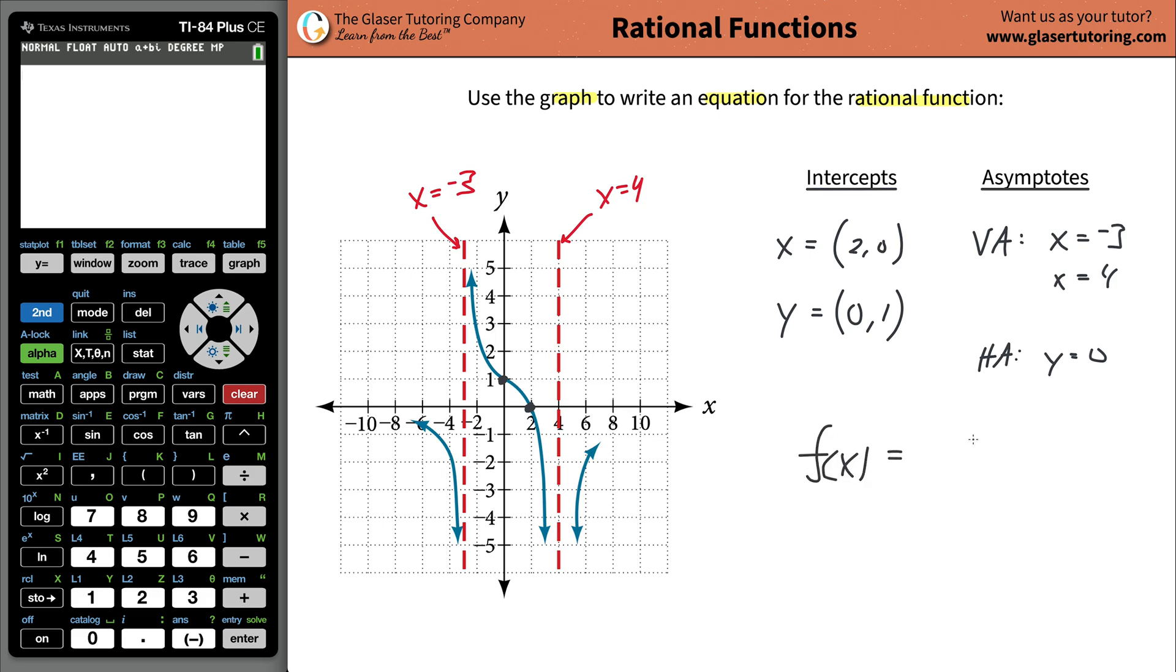Once you have all those pieces to the puzzle, now we've got to put them together. A rational function is simply a function where you have some polynomial function in the numerator and some different polynomial function in the denominator. We've got to treat each of these three pieces separately.